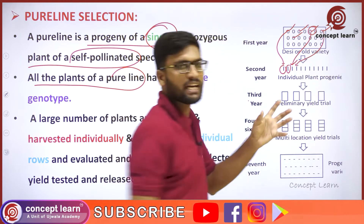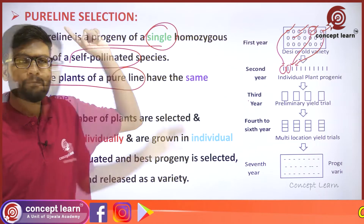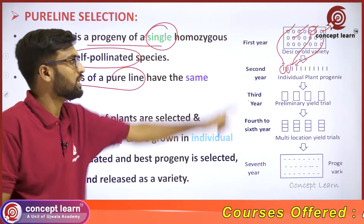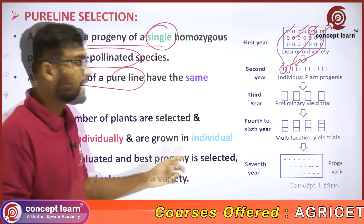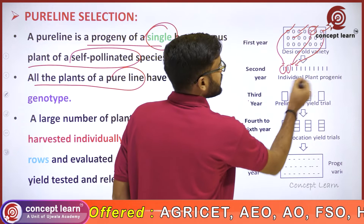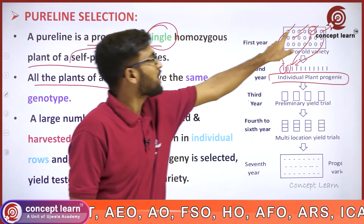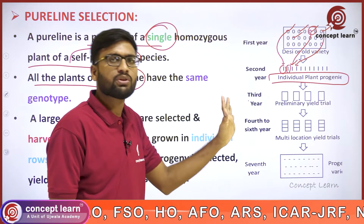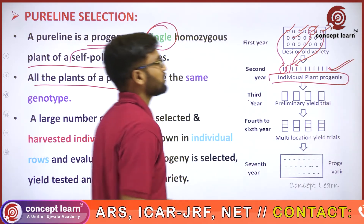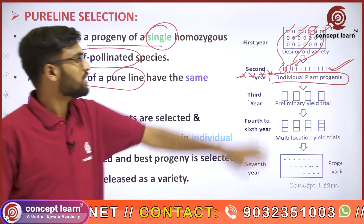In pure line selection, each plant is kept separate and not mixed. In mass selection, we mix the harvested seed. But in pure line selection, the harvest is kept separate and grown separately. This is the key difference between mass selection and pure line selection.